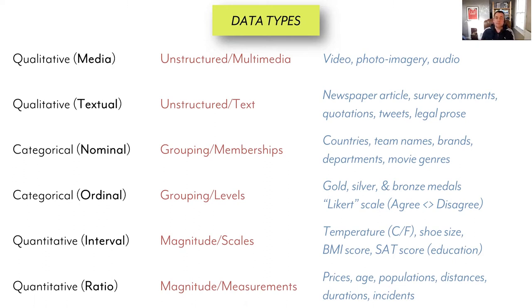Categorical nominal data is a grouping device where you've got different and distinct memberships — these things are different to those things, there's a separation. Countries, team names, brands, departments. Ordinal categories still have that grouping essence, but there are now discrete levels, perhaps sequences or hierarchies. So, for example, in the Olympics, gold is better than silver, silver is better than bronze in terms of medals. In survey design, the Likert scale from agreement to disagreement is an ordinal category.